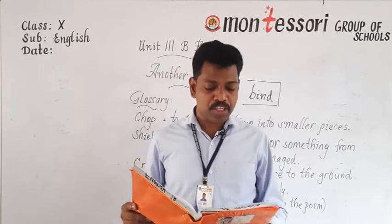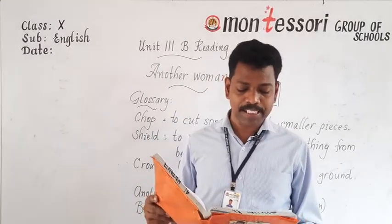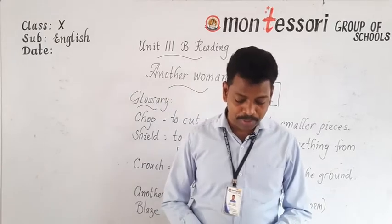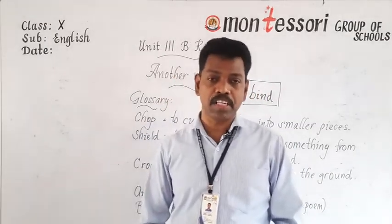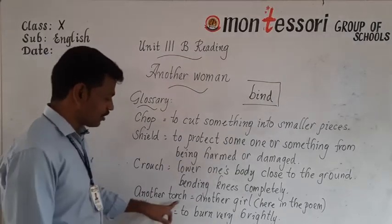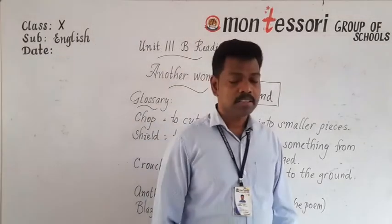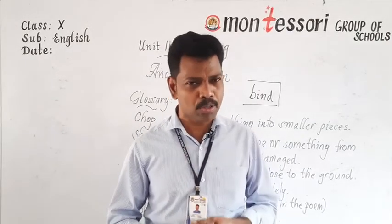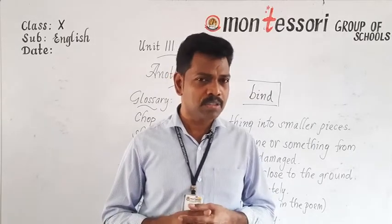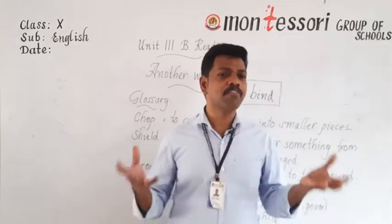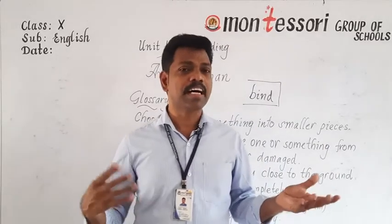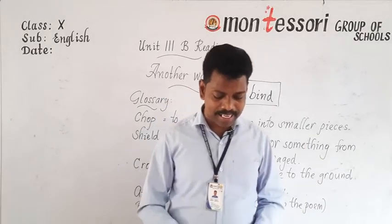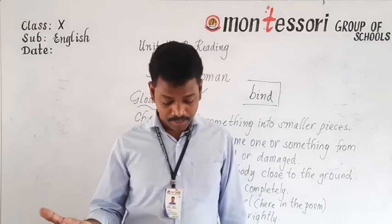Another torch blazing in the dark, another woman we shield our faces from the heat. The poet Imtiyas Dharker concludes the poem saying another torch blazing in the dark. In this poem, 'another torch' means another girl. Is it only this one girl who commits suicide because of not bearing with her in-laws? No. Especially in India, there are many, many cases day by day — thousands of such cases.